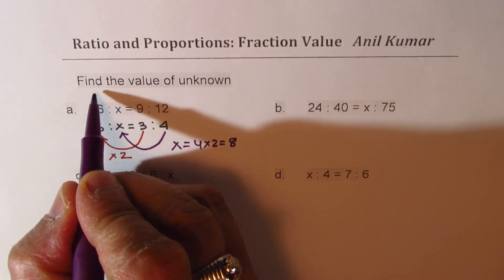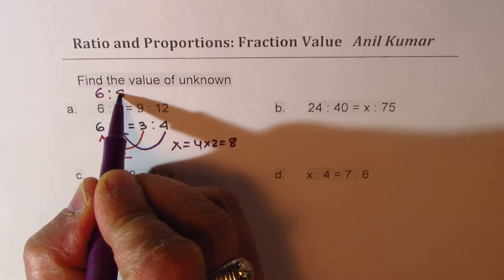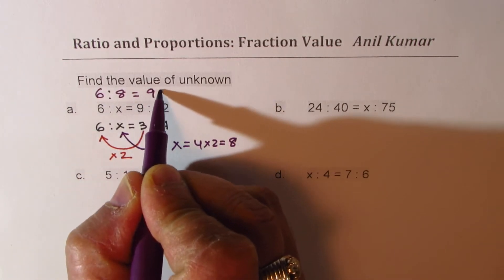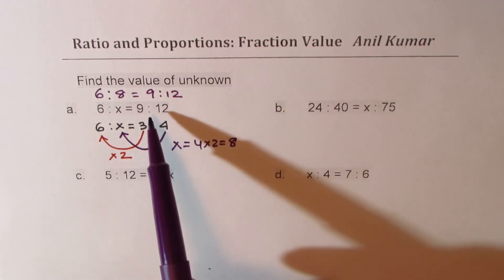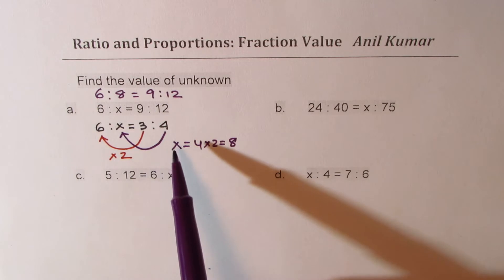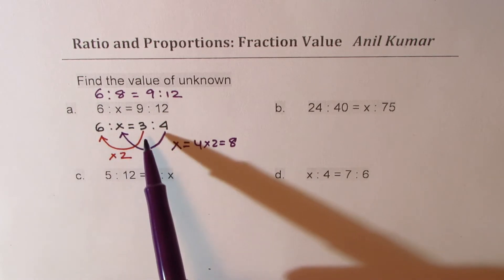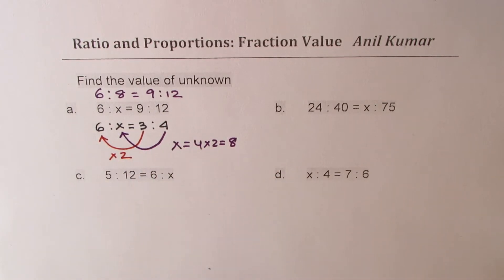So now we know that 6 is to 8 equals to 9 is to 12. Perfect. So here we did a reduction and then we could find a multiple and solve the question.